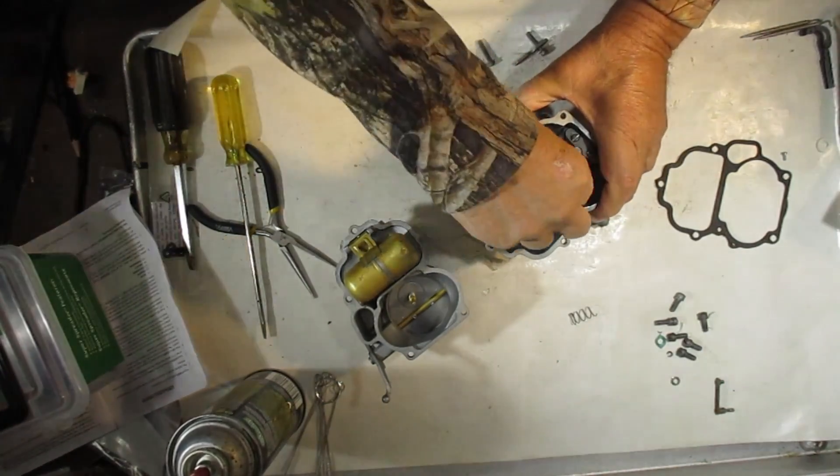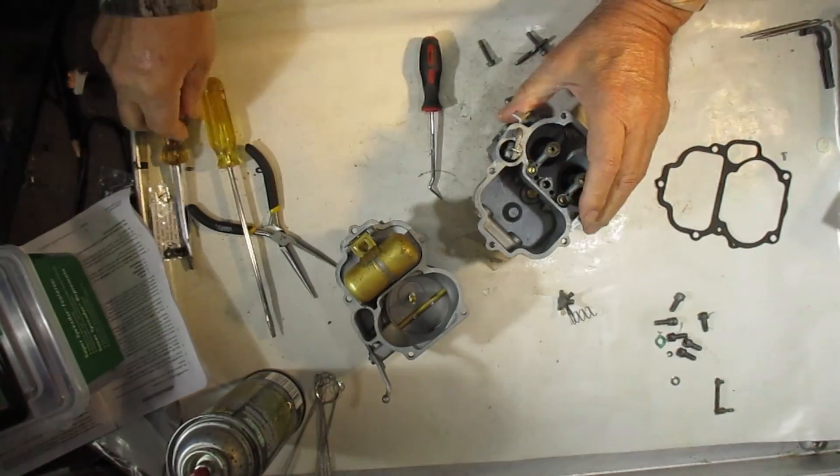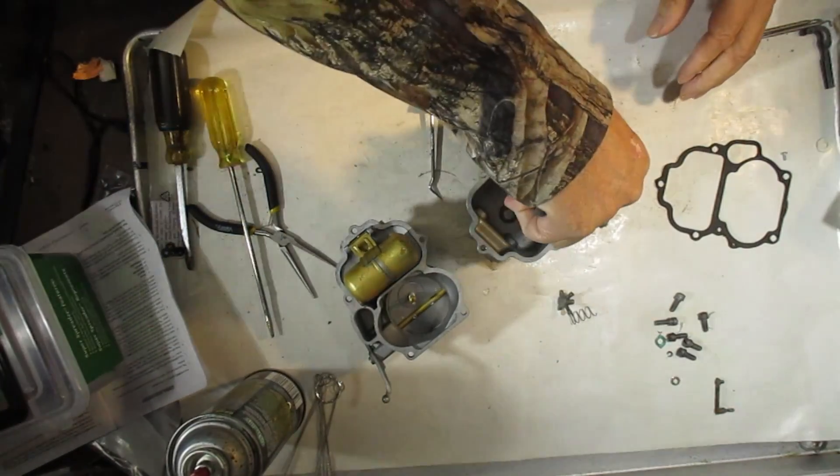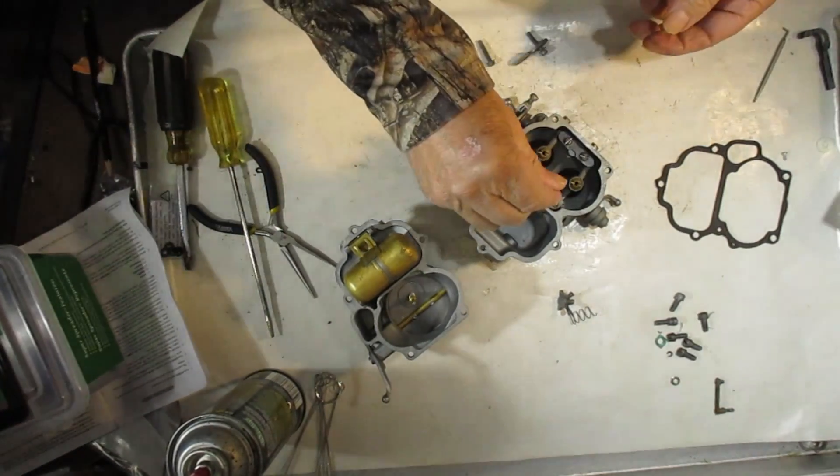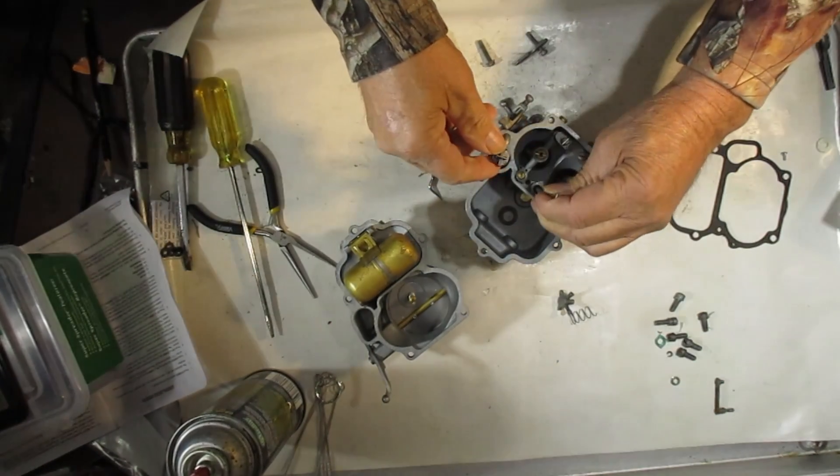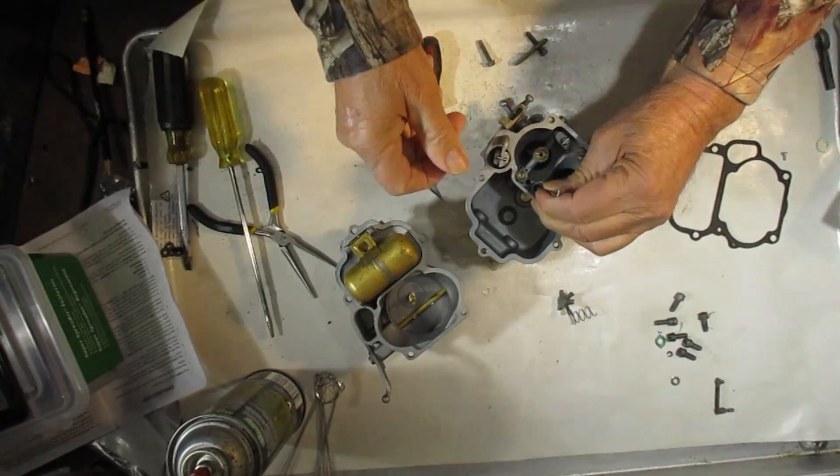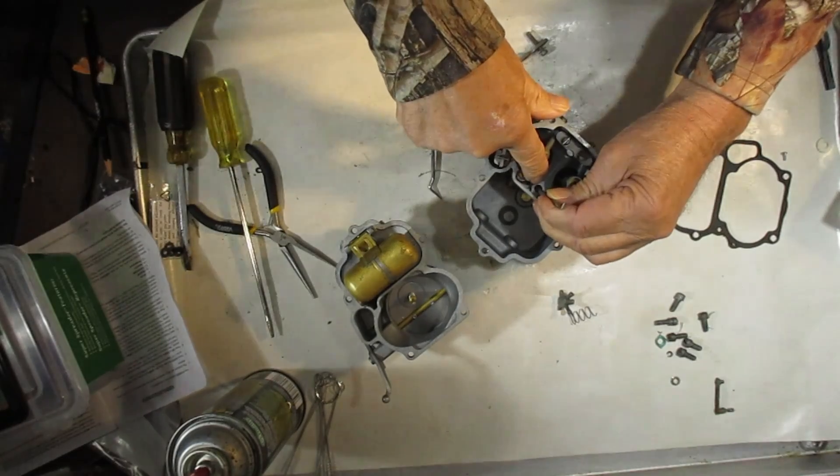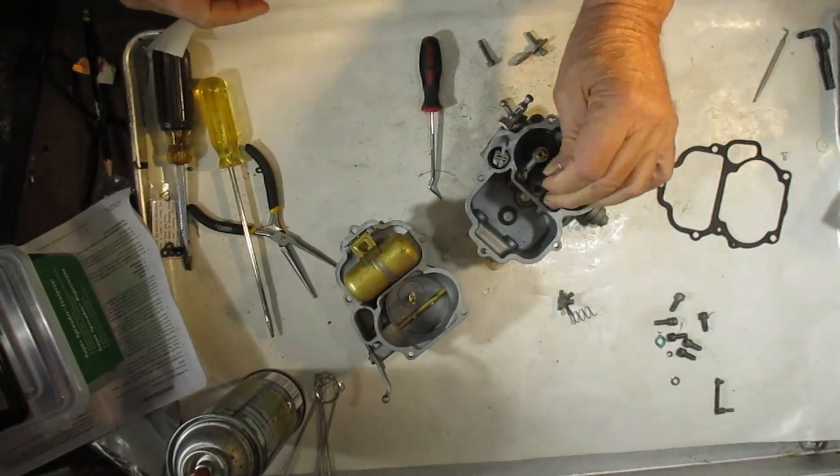The other thing you can do is test your check ball. With fuel in the well, hold your check weight down and push down on your pump. You shouldn't have any fuel come out, or at least very little past the check weight. If it is, then it's leaking. That's another way to test it on the bench.